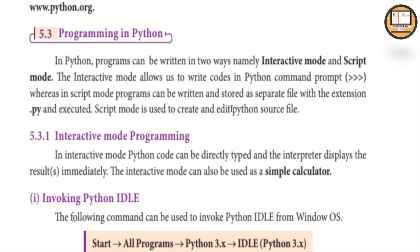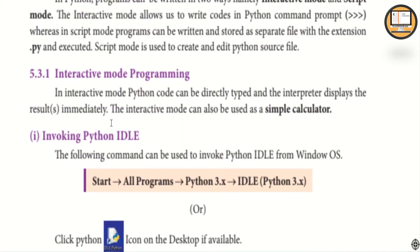Script mode is used to create and edit Python source files. In section 5.3.1, interactive mode programming is covered. In interactive mode, Python code can be directly typed and the interpreter displays the result immediately. Interactive mode can also be used as a simple calculator.